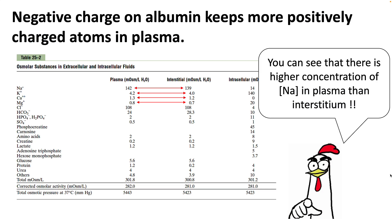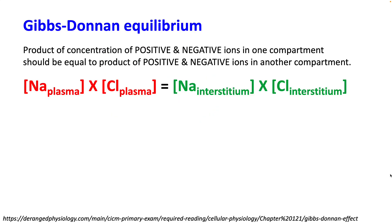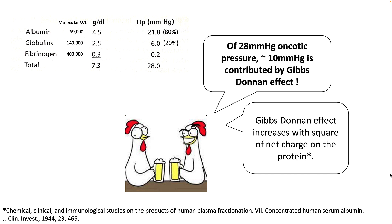When you look at the positive ion concentration in plasma and interstitium, you can see that the concentration of all positive ions is slightly higher than those in interstitium. In short, Gibbs-Donnell equilibrium says that the product of concentration of positive and negative ions in one compartment should be equal to the product in another compartment. The Gibbs-Donnell effect increases with the square of the net charge on the protein, and of the 28 mmHg oncotic pressure generated by all proteins in the blood, 10 mmHg is contributed by the Gibbs-Donnell effect.